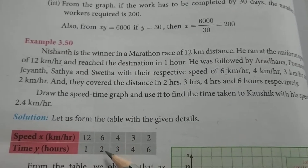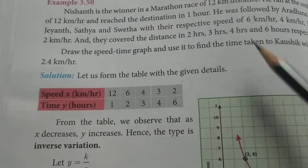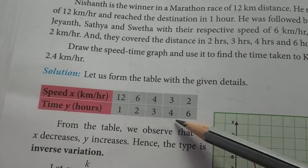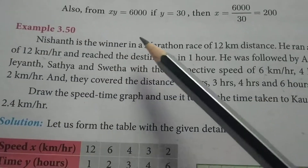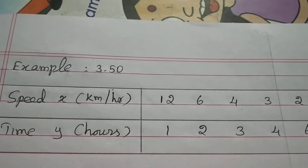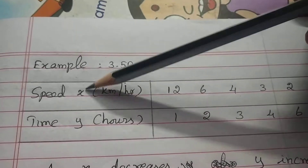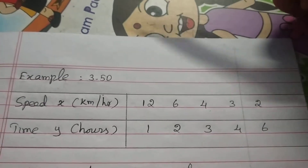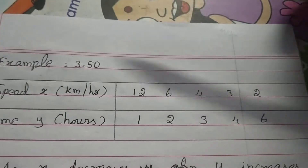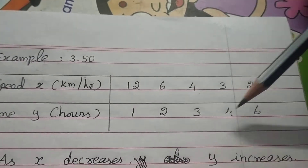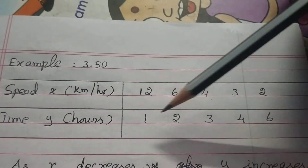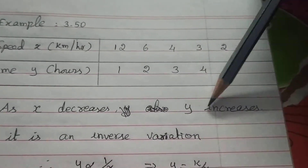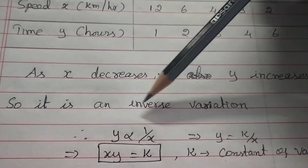From the table: 12×1, 6×2, 4×3, 3×4, 2×6 — you can multiply all the values to find the data. So we can find the speed x and time y from the table and observe the variations. If x is decreasing then y will increase. The speed is less and the time will be more. So x decreases and y increases. What is the variation? It is the inverse variation.